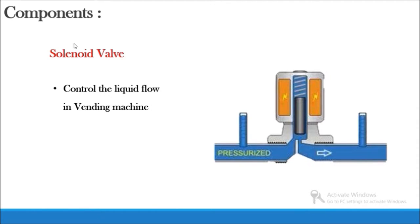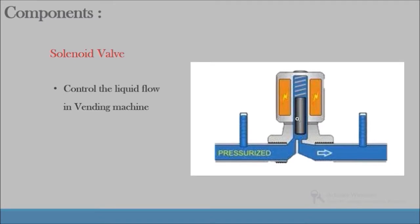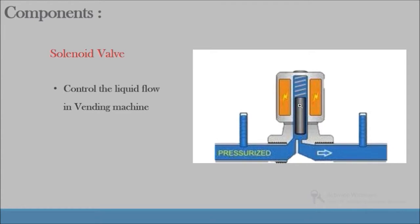Components: The first and the main part of our system is the solenoid valve. It works on a simple principle. When we apply voltage across the solenoid valve, the piston here moves in the upward direction.